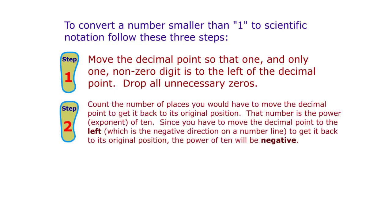Step 2: Count the number of places you would have to move the decimal point to get it back to its original position. That number is the power, or exponent, of 10. Since you have to move the decimal point to the left, which is the negative direction on a number line, to get it back to its original position, the power of 10 will be negative.